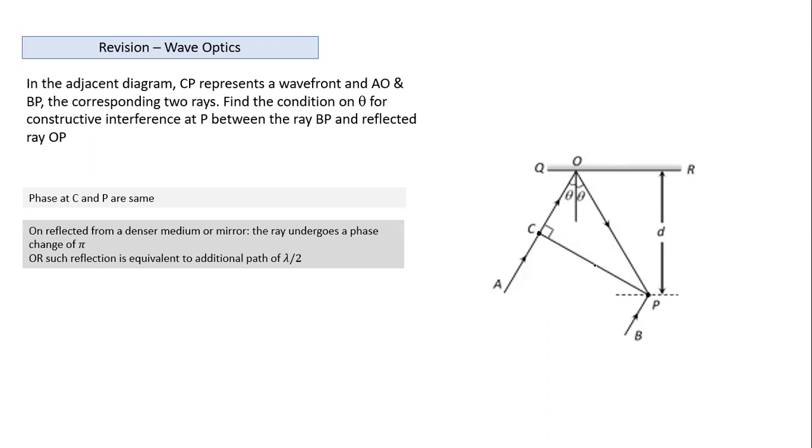Phase at C and P are same. Now a reflection also is happening, so this additional point we need to take into account. We have done this in case of wave motion on a string. What happens in case of a reflection? If the reflection happens from a denser medium or a fixed medium, the reflected ray undergoes a phase change of pi or phase change of pi. This phase is equivalent to a path length of lambda by two.